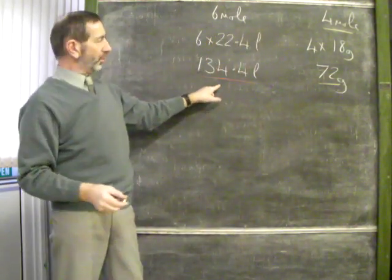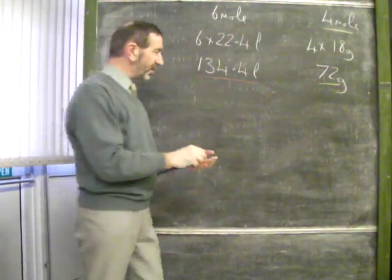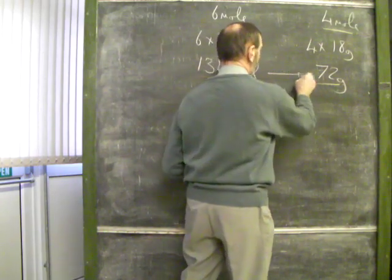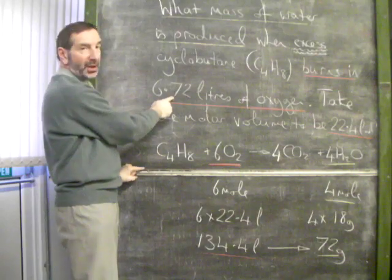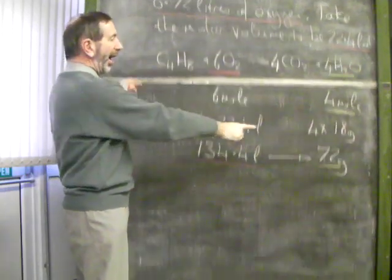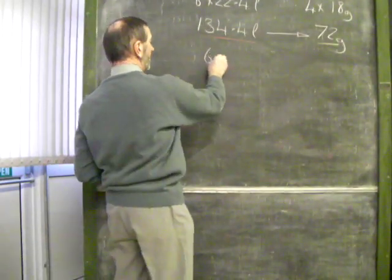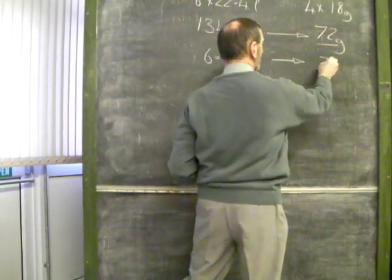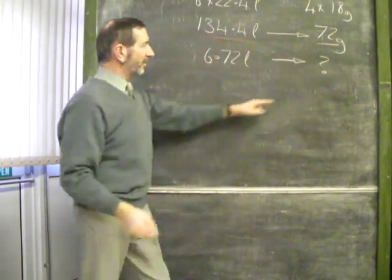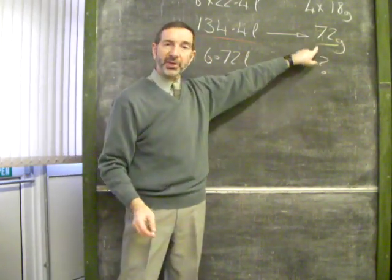If this volume of oxygen produces 72 grams of water, then we want to know, if we only have 6.72 litres of oxygen, how much water will be produced? 6.72 litres will produce how much water? Are we looking for a mass greater than 72 or less than 72?